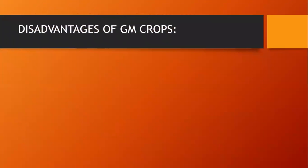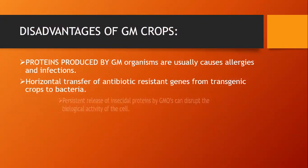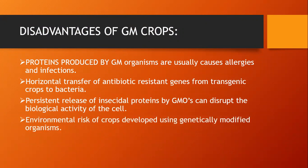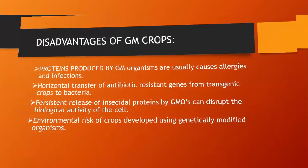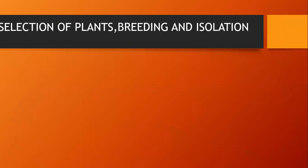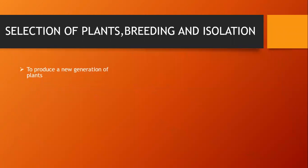Some disadvantages of genetically modified crops: proteins produced by genetically modified organisms usually cause allergies and infections. There is horizontal transfer of antibiotic resistant genes from transgenic crops to bacteria. Persistent release of insecticidal protein by genetically modified organisms can disrupt the biological activity of the cell. There are also environmental risks because some organisms cause allergies and proteins which increase or decrease the metabolism of the cell.